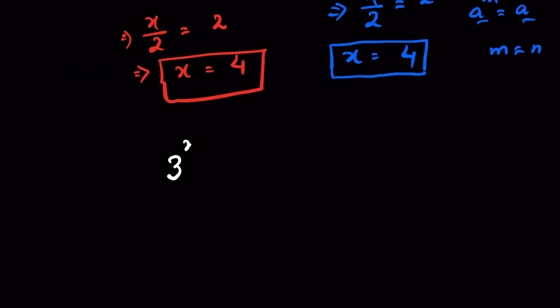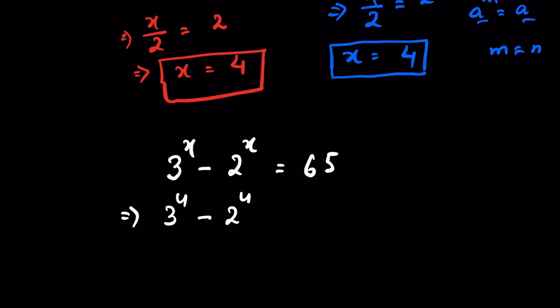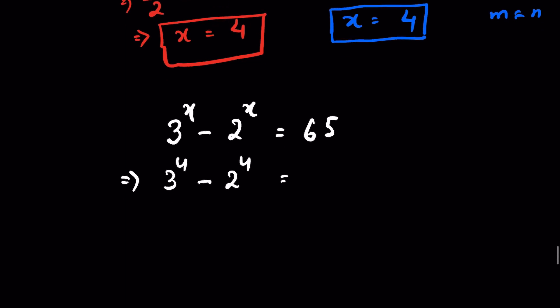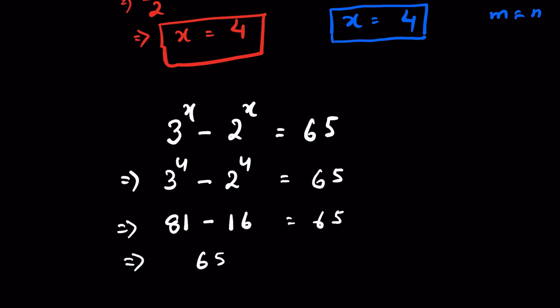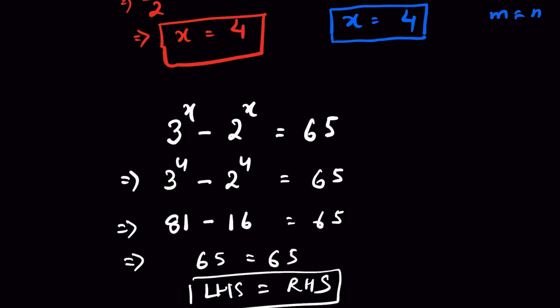We can verify: 3^x − 2^x = 65, so 3⁴ − 2⁴ = 81 − 16 = 65. LHS equals RHS, so our answer is verified. Like and subscribe, thanks for watching.